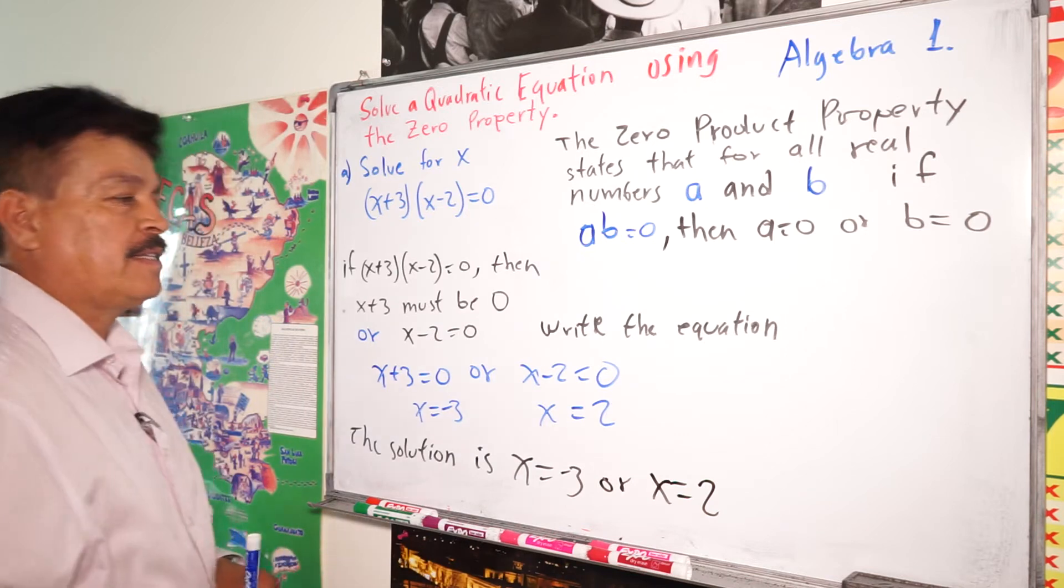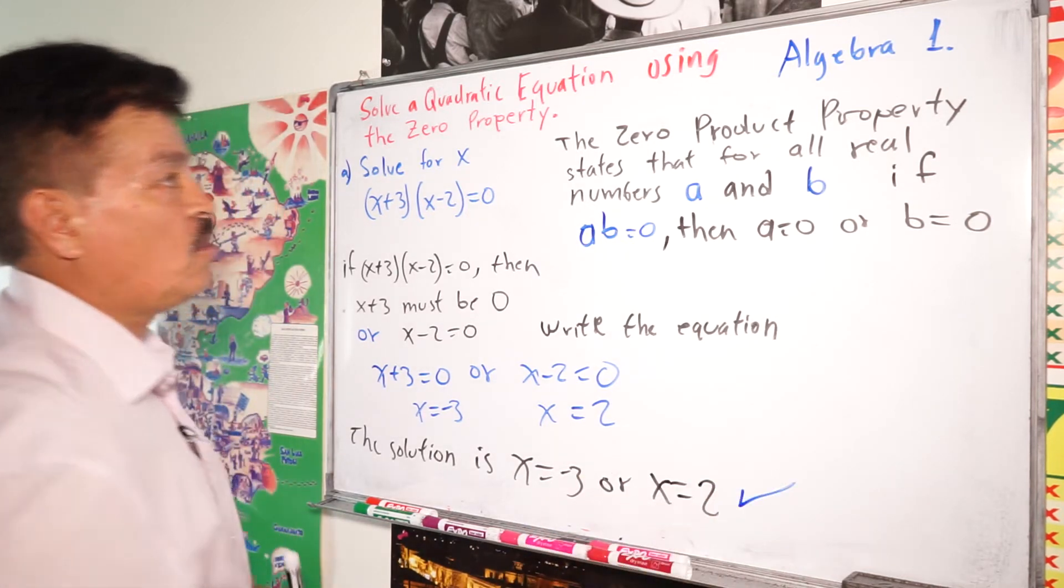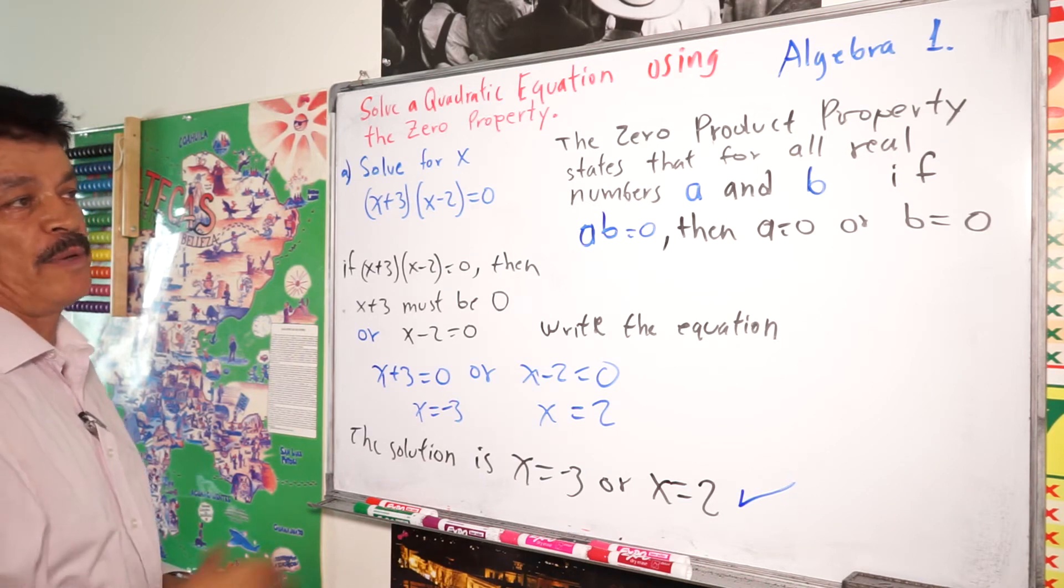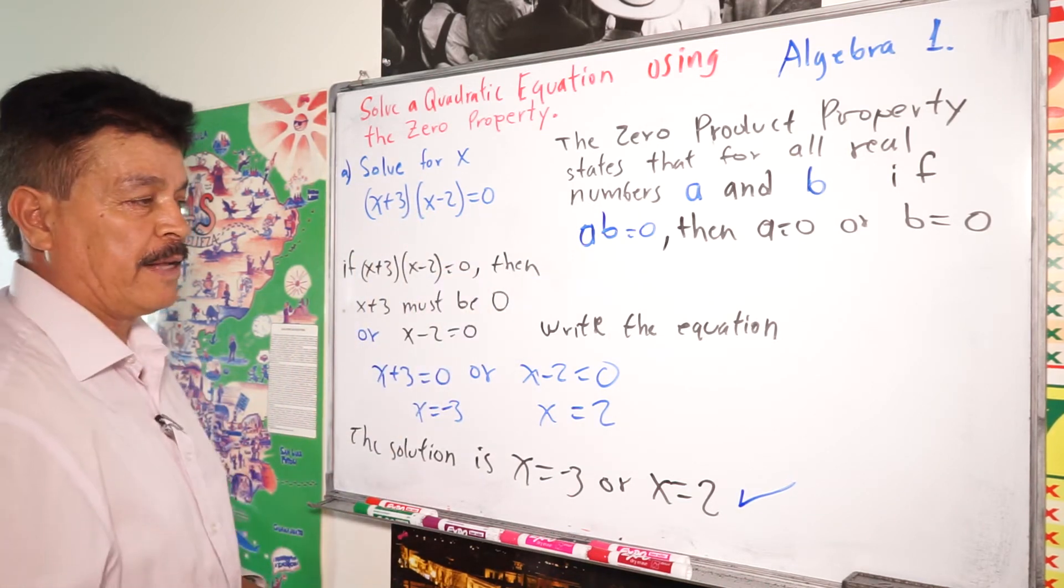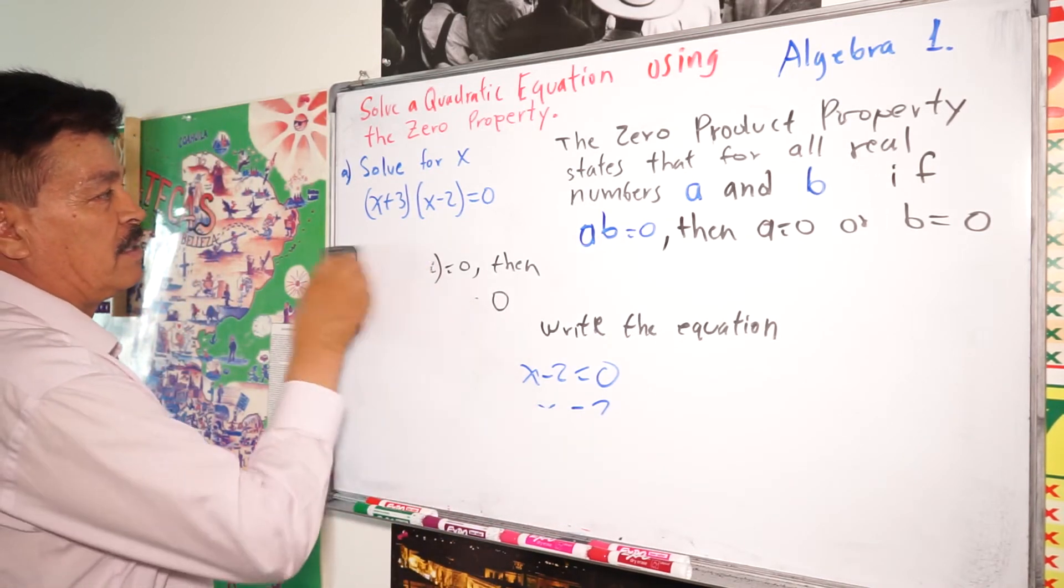See? Okay. This is our solution for this quadratic equation using the zero property, the zero product property. Okay? Let's see another example. Let me write another problem, another simple problem.